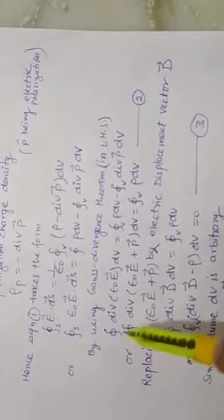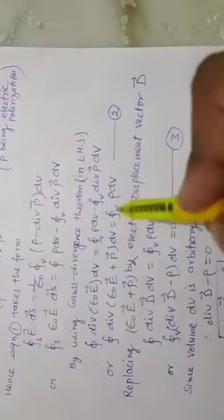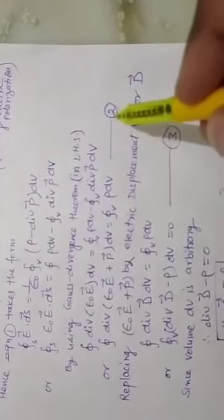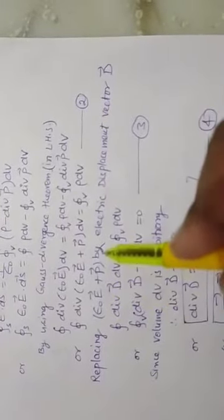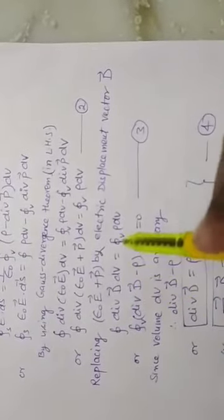Using the divergence theorem, we can write: closed surface integral of epsilon naught E·ds equals closed integral of rho dv minus closed integral of divergence P dv. Rearranging, the divergence of (epsilon naught E plus P) integrated over the volume equals the integral of rho dv, giving us equation number 3.